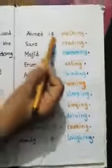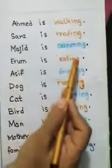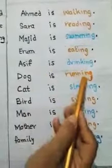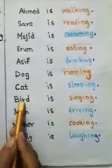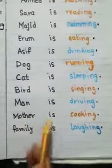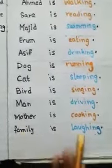One more time: Ahmad is walking. Sara is reading. Majit is swimming. Iram is eating. Asif is drinking. Dog is running. Cat is sleeping. Bird is singing. Man is driving. Mother is cooking. Family is laughing.